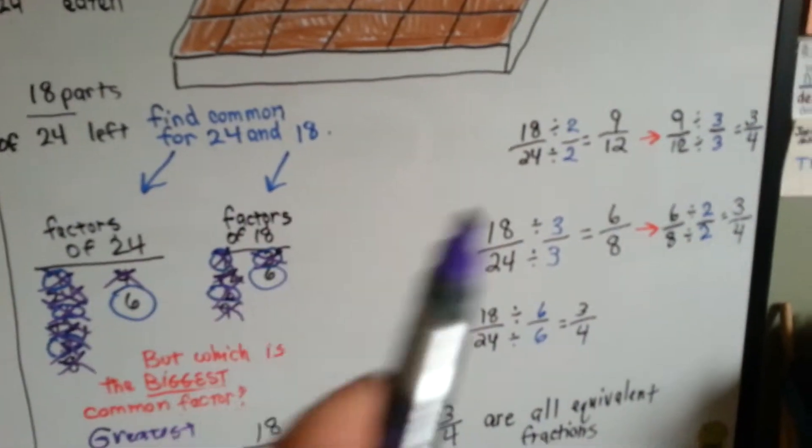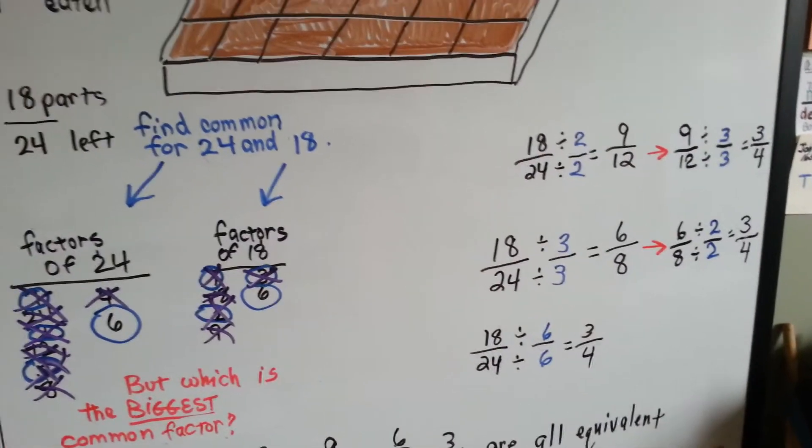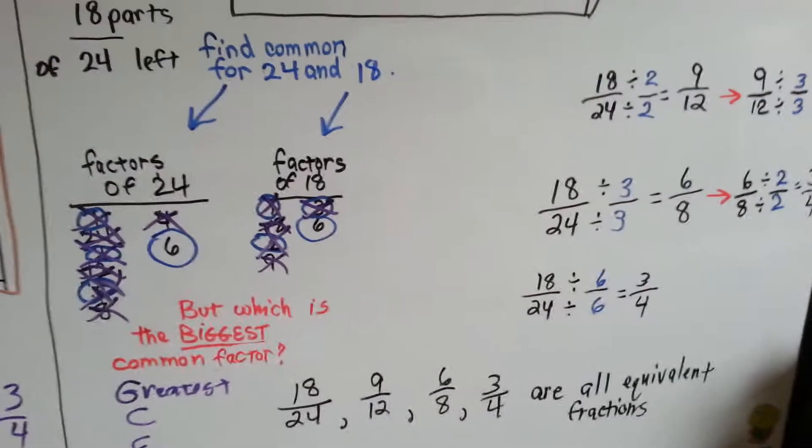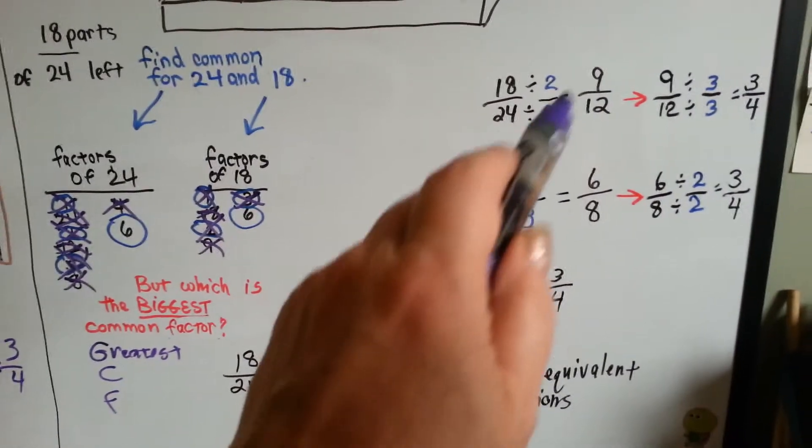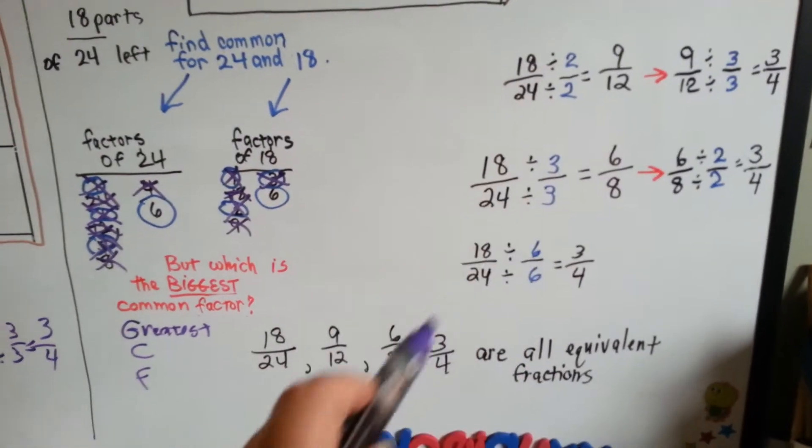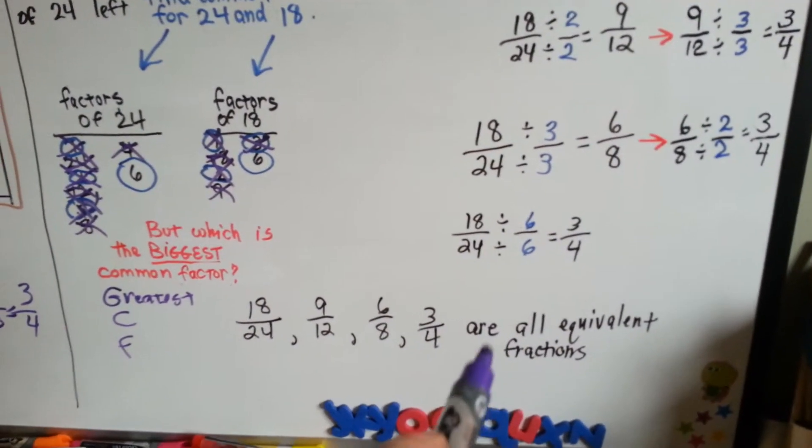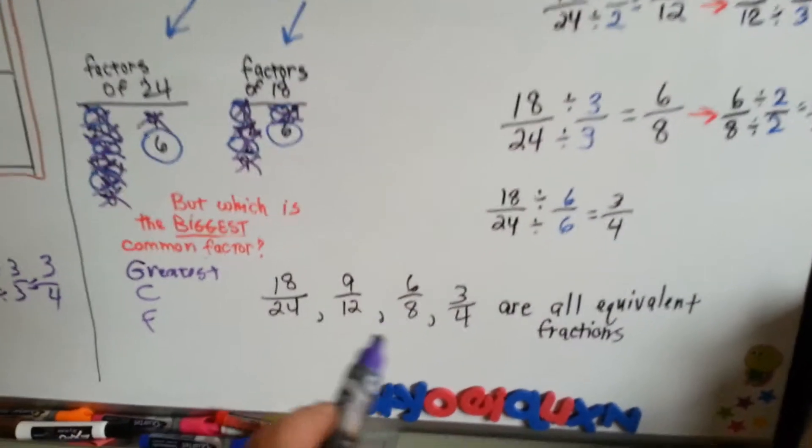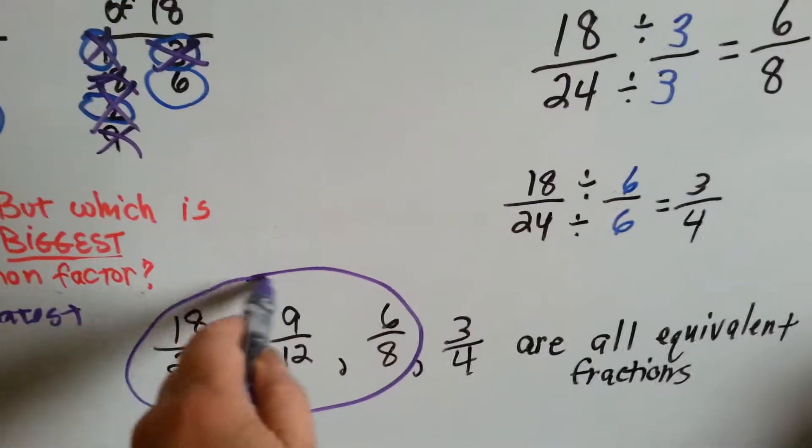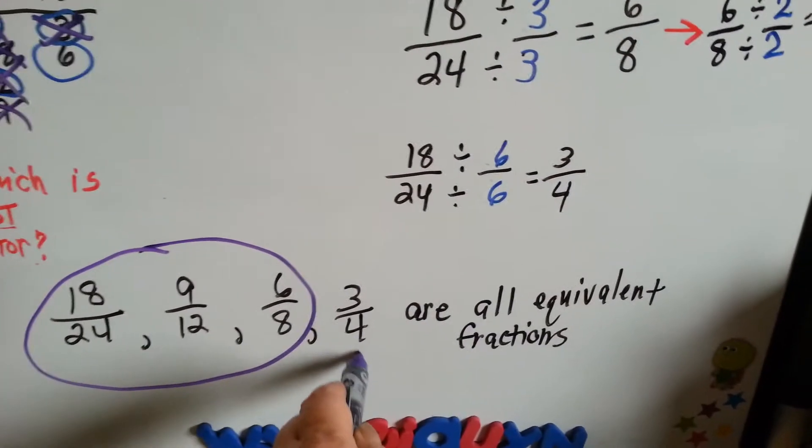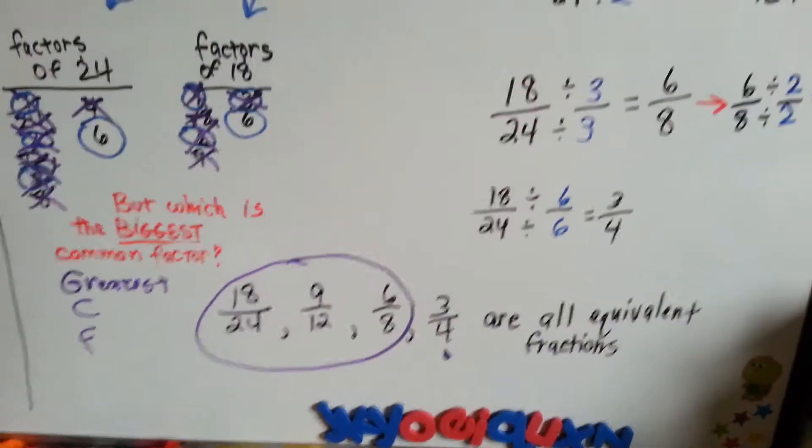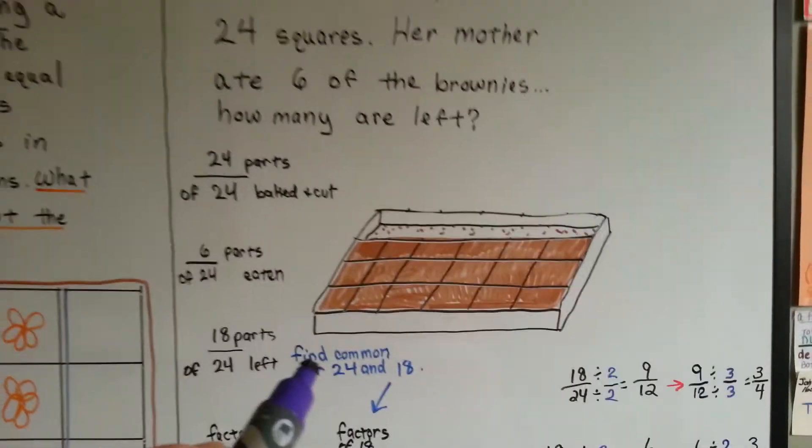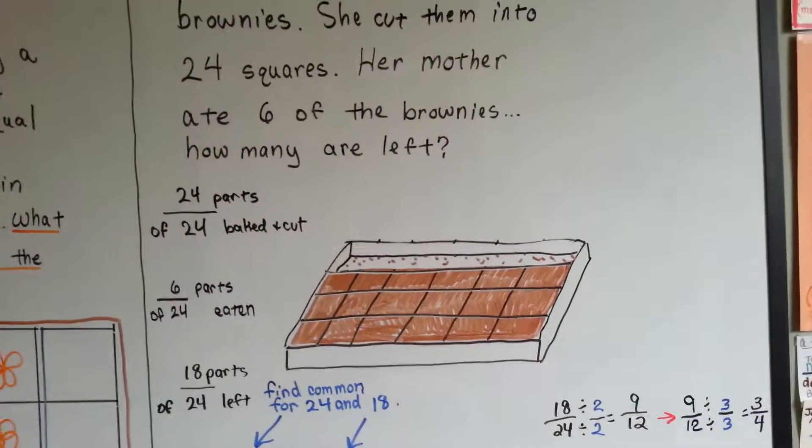So what have we learned from this? We have learned that eighteen twenty-fourths, nine-twelfths, six-eighths, and three-fourths are all equivalent fractions. It's just that these aren't simplified. This one is simplified as far as it'll go, and these are not simplified, but they're all equivalent to each other. They all equal the same amount. They all mean that someone ate the six brownies out of the pan that had twenty-four in it.